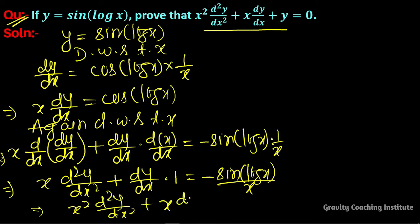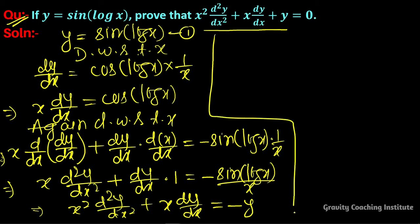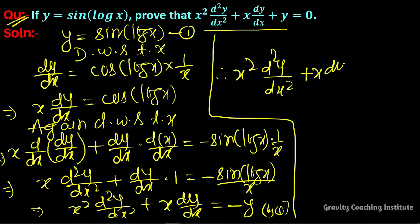Since minus sin(log x) equals minus y, taking minus y to the left side it becomes positive. Therefore x²(d²y/dx²) plus x(dy/dx) plus y equals zero. Hence proved.